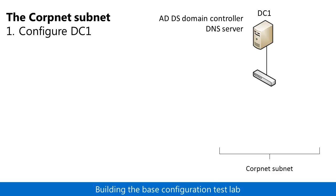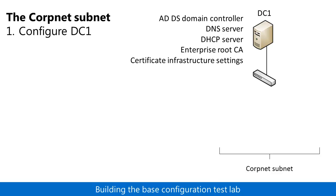DC1 is also configured as a DNS server, a DHCP server, an Enterprise Root Certification Authority, or CA, and with additional certificate infrastructure settings, and then a user account named User1 is added.